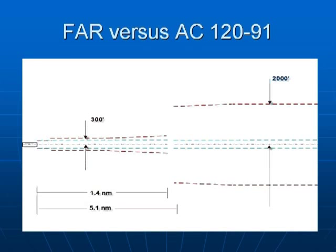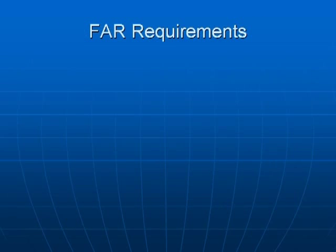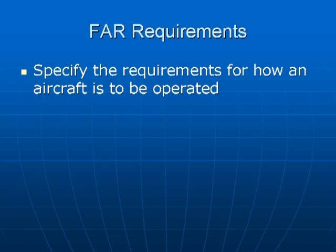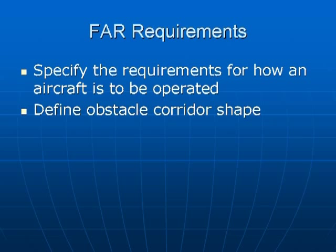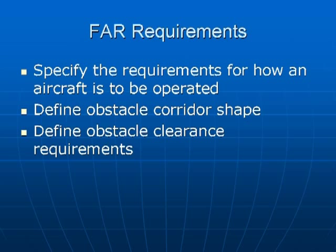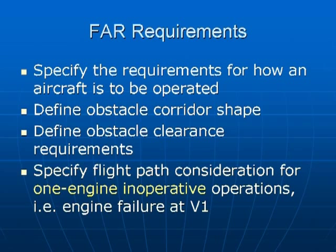Here's a comparison of the FAR versus advisory circular corridors. In summary: FAR requirements specify how an aircraft is to be operated through the AFM; the FARs define the obstacle corridor and shape, supplemented by the advisory circular; the FARs define obstacle clearance requirements; and most importantly, the FARs require that all flight path considerations be for one engine inoperative and that the engine fails at V1. All runway analyses take into account the critical engine failing at V1 and continuing the flight path with one engine inoperative.